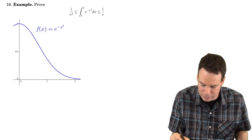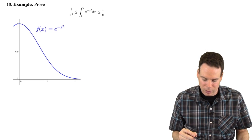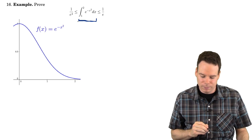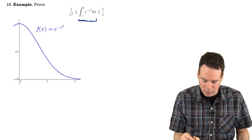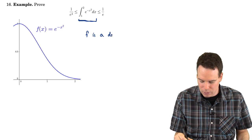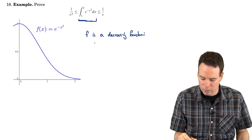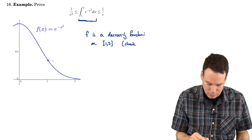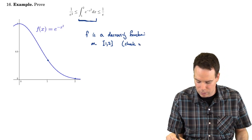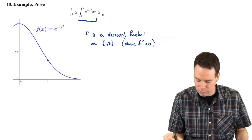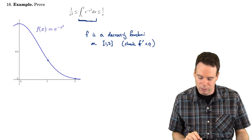So let's look at a quick example of an application of this property. Here we're interested in coming up with an upper and lower bound on the value of this integral from 1 to 2. The thing to keep in mind here is that f is a decreasing function on the interval 1 to 2. The graph is drawn here and you can see it's decreasing, but you could also check that the derivative is negative on that interval.